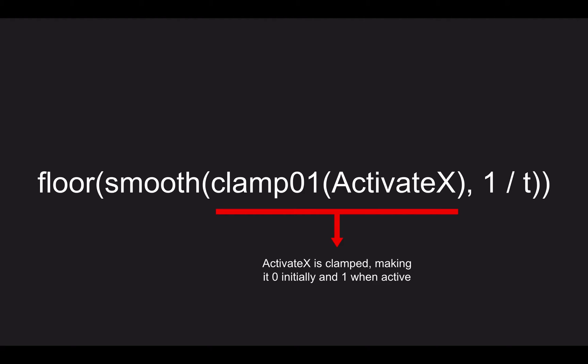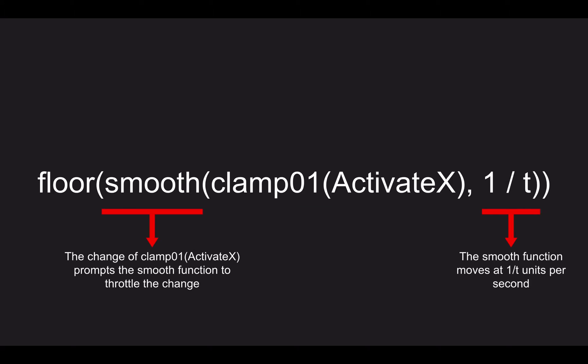To examine how this all works in tandem in this particular piece of code, initially we have activate x that is clamped to zero and one. So initially it would have a value of zero, and when we decide to press activation group x, when I press activation group one it's going to be zero initially, but when I press it it's going to become one when it's active. Now the smooth function looks at that, looks at the fact that the clamp portion goes from zero to one, and instead of letting it jump straight, it's going to restrict that change to a rate of one over t units per second.